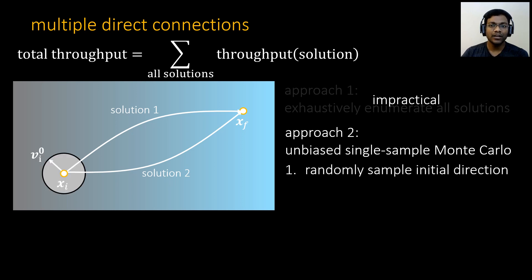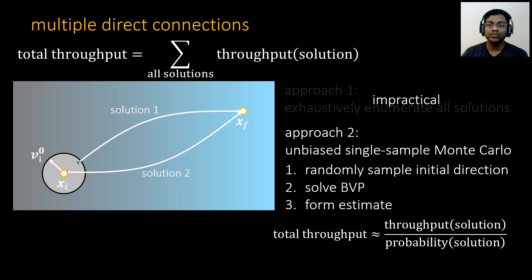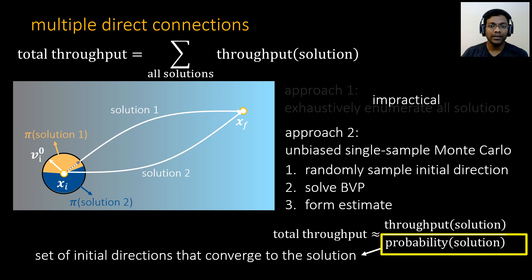For this, we randomize the initialization to the gradient descent algorithm and solve the BVP. The Monte Carlo estimate for the total throughput is the ratio of throughput of the solution to the probability of reaching that solution. To compute this probability, we need to know the set of all directions that will converge to this solution. We estimated this probability using an algorithm similar to Zeltner et al., and the details can be found in our paper.